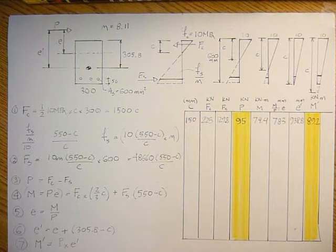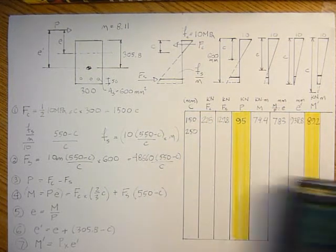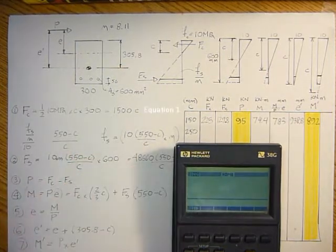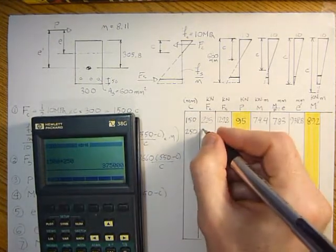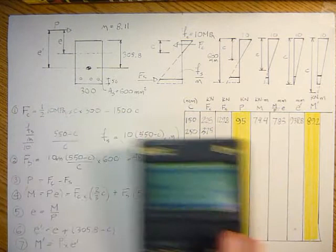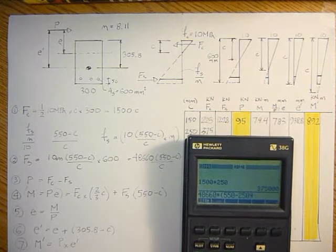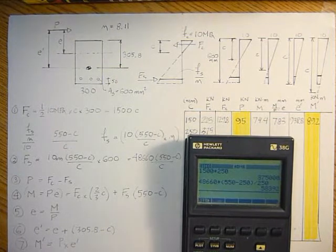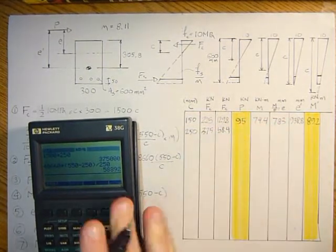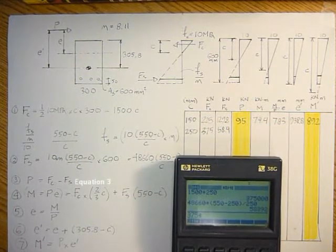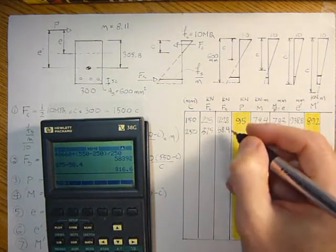And we'll just keep going now. We'll take another neutral axis location, we'll say 250. So for 250, force in the concrete is 1500 times 250, which gives me 375 kilonewtons. And the force in the steel would be 48660 times 550 minus 250 divided by 250, and that's 58.4 kilonewtons. And then the residual leftover would be 375 minus 58.4. P equals FC minus FS, so FC minus FS is 316.6.